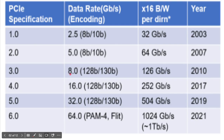Gen 3: data rate is 8 GT/s, encoding is 128B/130B. For every 8 bits of data, you append two extra bits for encoding, which affects efficiency — actual data is only 8 bits but you are appending 2 extra bits. These two extra bits are added to maintain DC balance, recover the clock, and detect errors. Gen 5: data rate is 32 GT/s, encoding is 128B/130B.